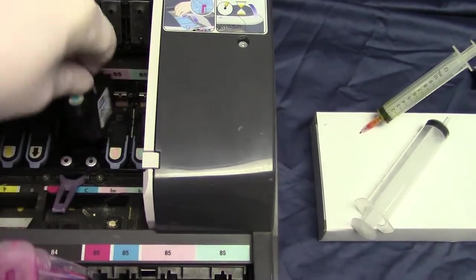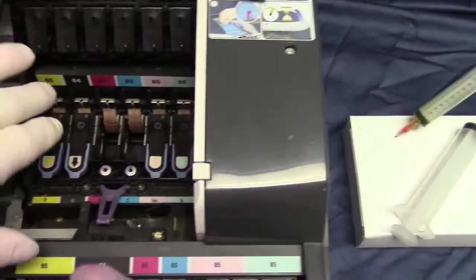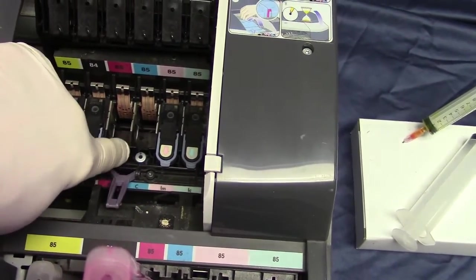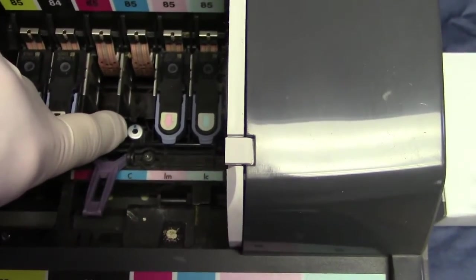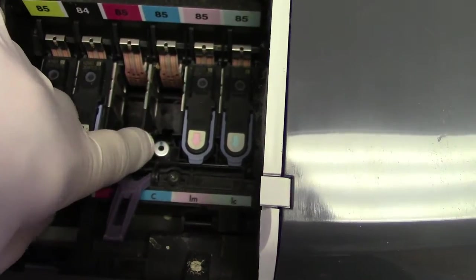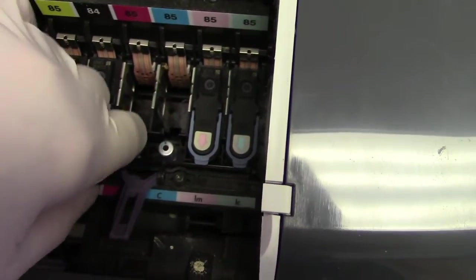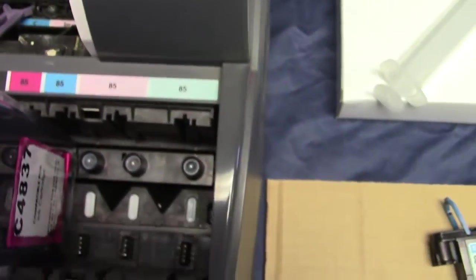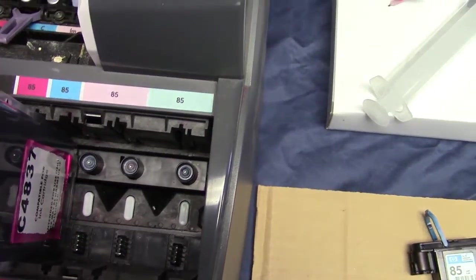You see that little silver top here? That's where the print head sticks into, and there's the same thing down here. When you take your cartridge out, that's where you're going to get your ink from.